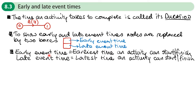The early event time is the earliest time an activity can start or finish — start if the boxes are at the beginning of the activity, finish if the boxes are at the end. This includes the fact that previous activities must be completed. The late event time is the latest time an activity can start or finish, so the latest start time is in the bottom box on the left side of an activity, and the latest finish time is the bottom box on the right side.